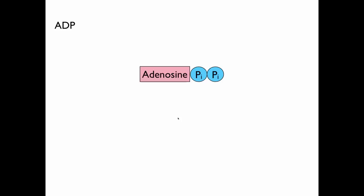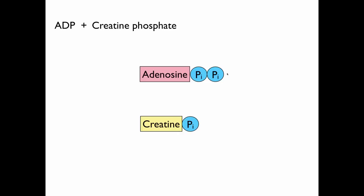One of our substrates is adenosine diphosphate. Remember the phosphate group has been removed to release energy to do cellular work, and now we need to be able to re-synthesize ATP. The way this is going to be done is by creatine phosphate — a molecule of creatine with a phosphate group attached to it — donating a phosphate group to ADP.